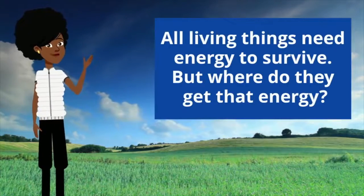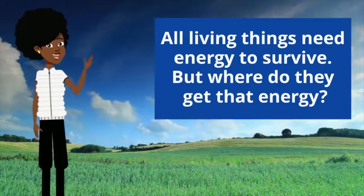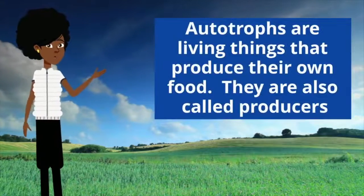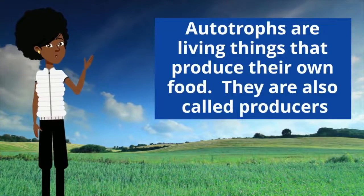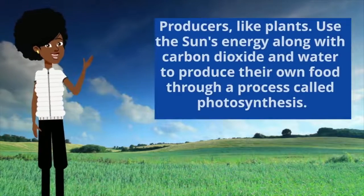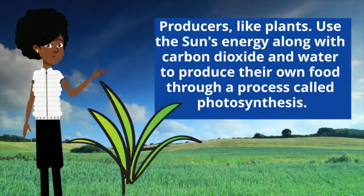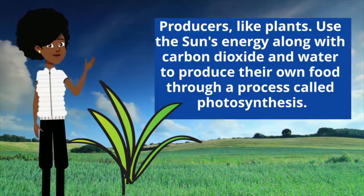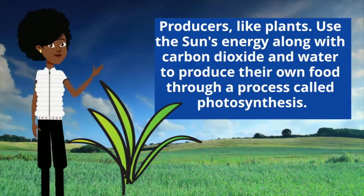All living things need energy to survive, but where do they get that energy? Autotrophs are living things that produce their own food. They are also called producers. Producers, like plants, use the sun's energy along with carbon dioxide and water to produce their own food through a process called photosynthesis.